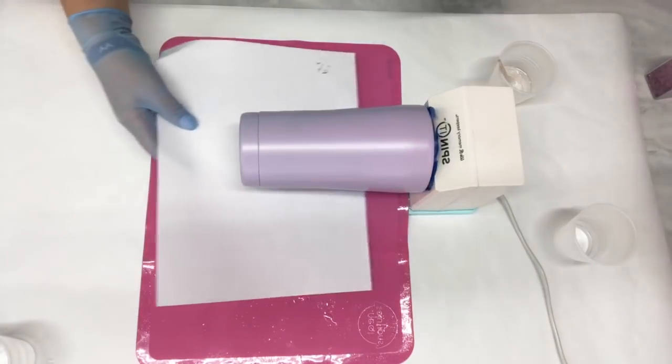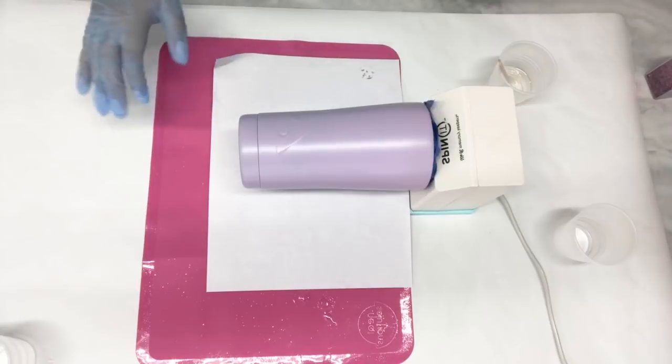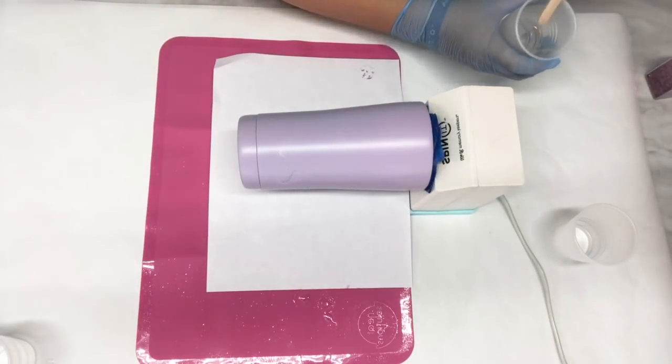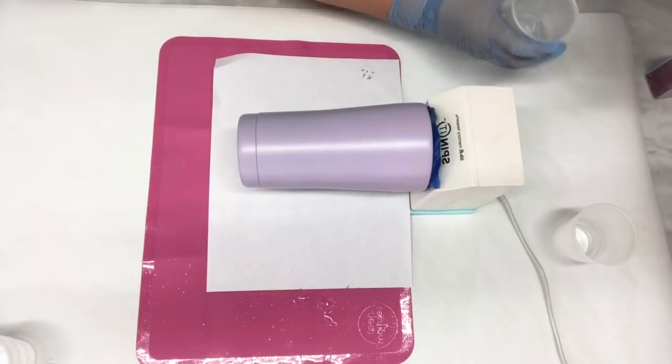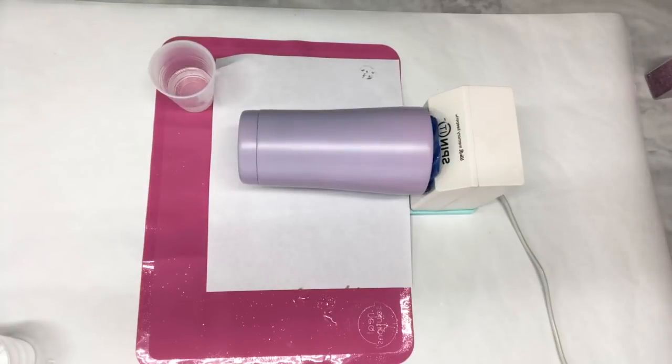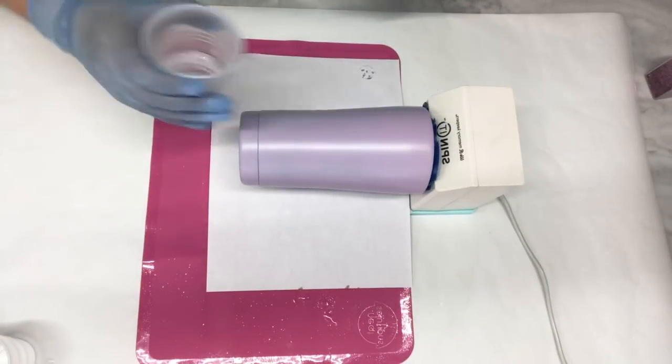For this first layer while I'm putting my epoxy on, I'm going to put a piece of paper and it's going to catch any drips of the epoxy that may come down from the cup.